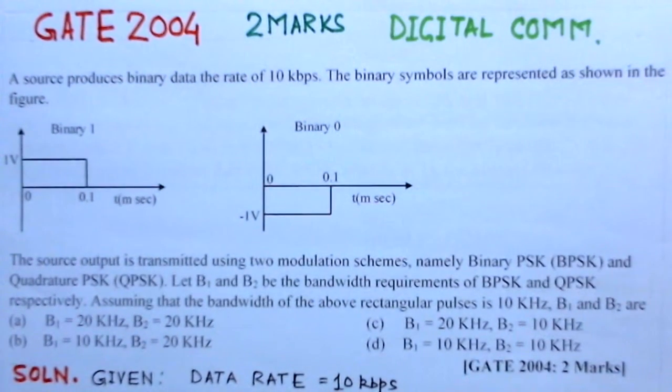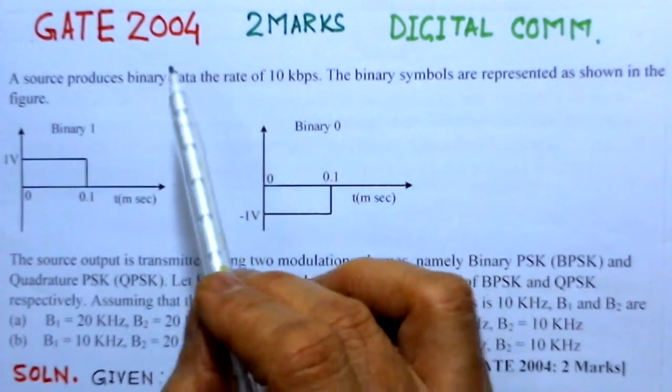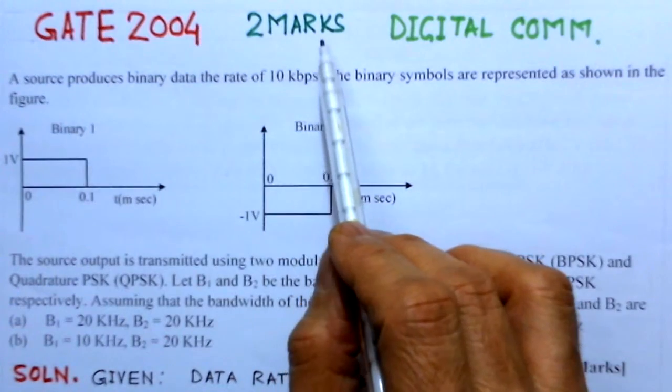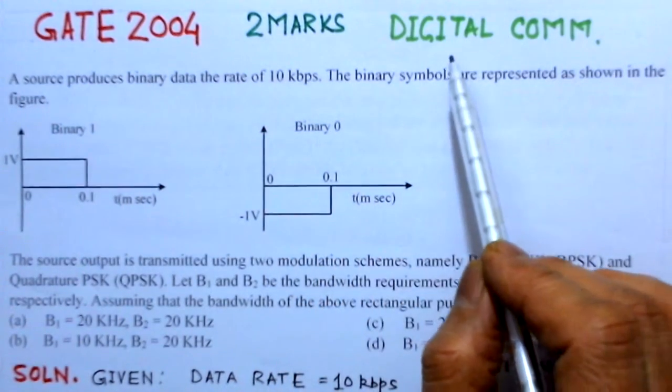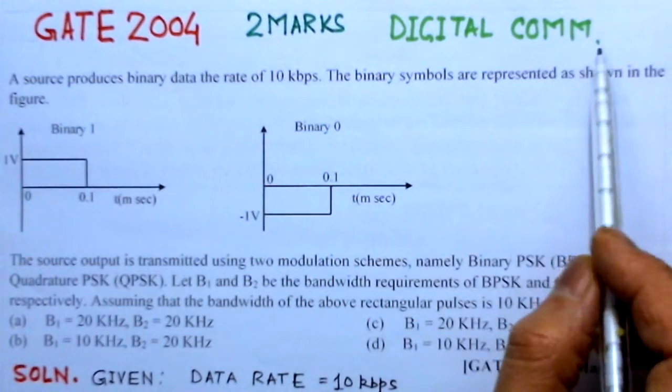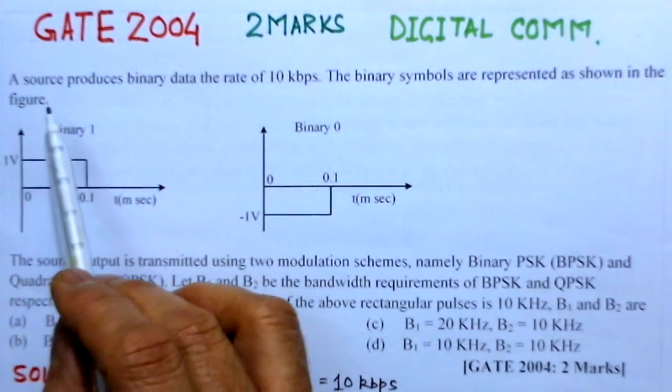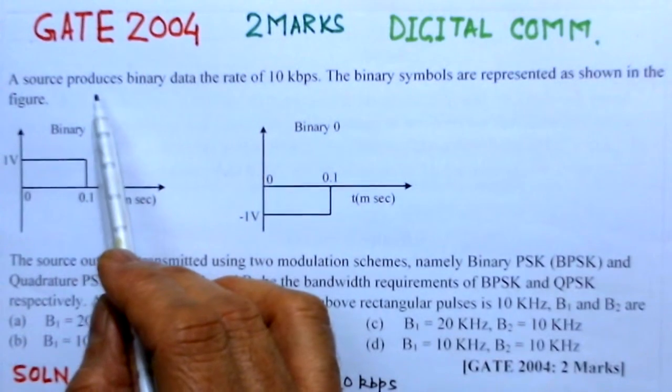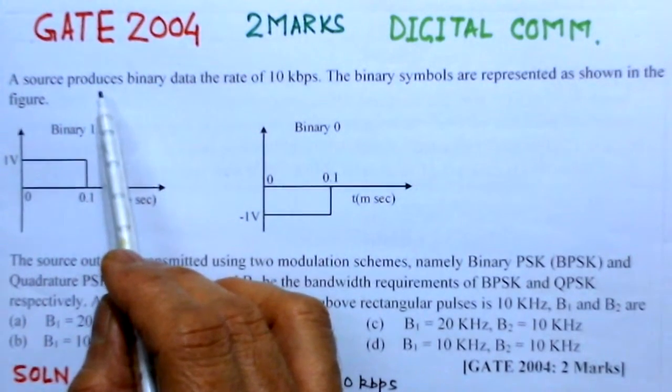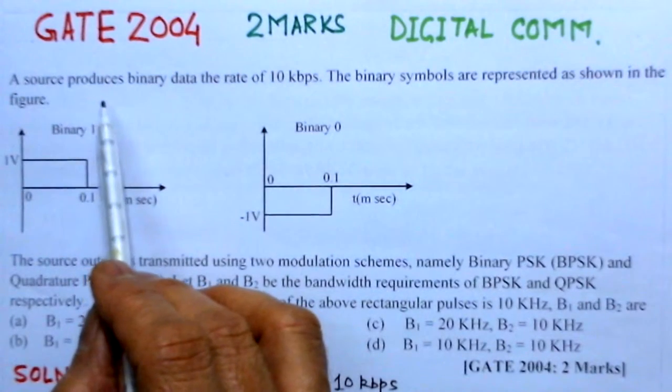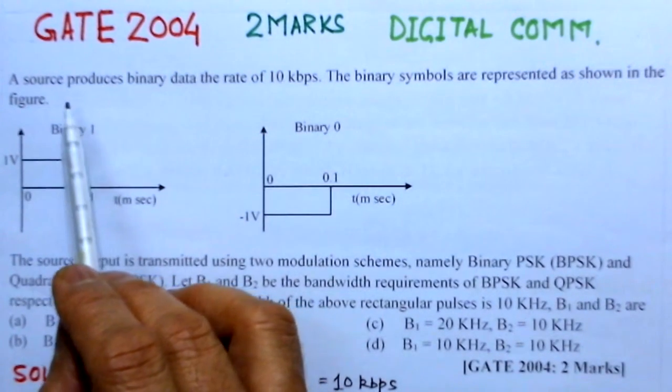The present problem considered is of GATE 2004, it's for two marks, and it is from the area of digital communication. First we'll read out the problem, then understand the problem, and then give the solution.